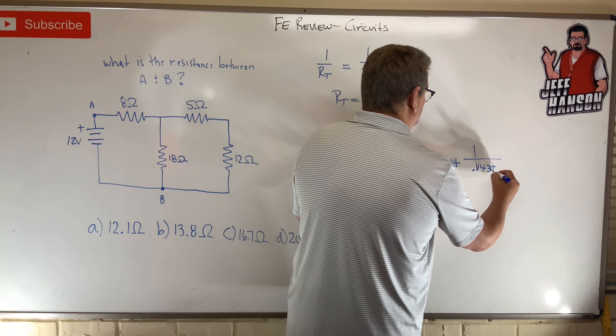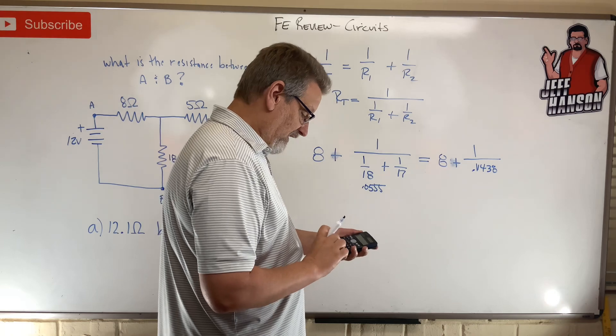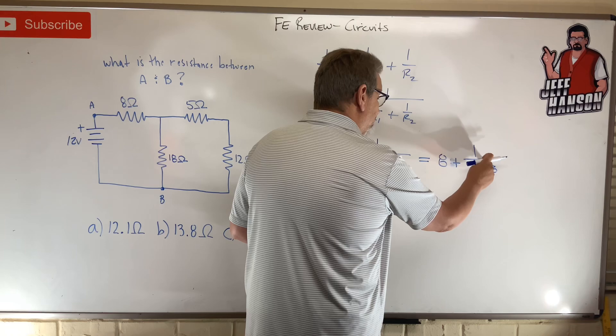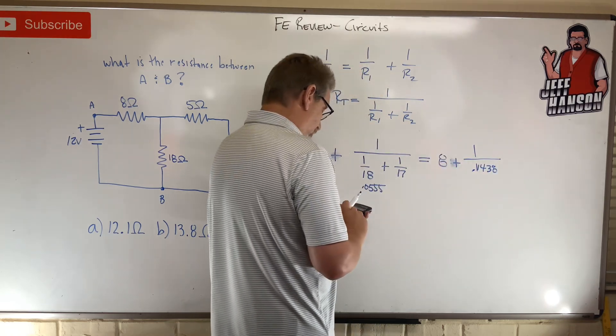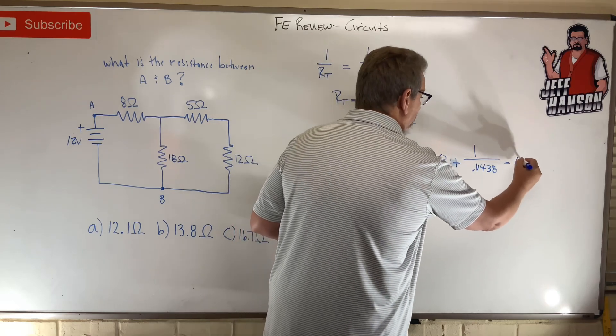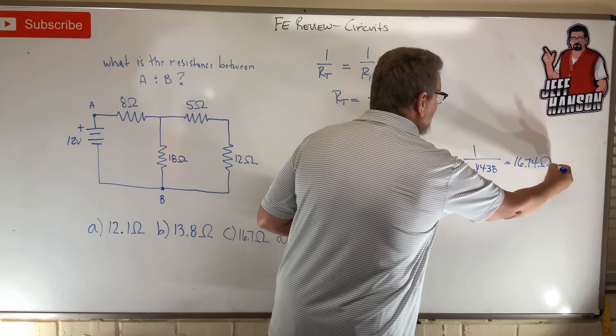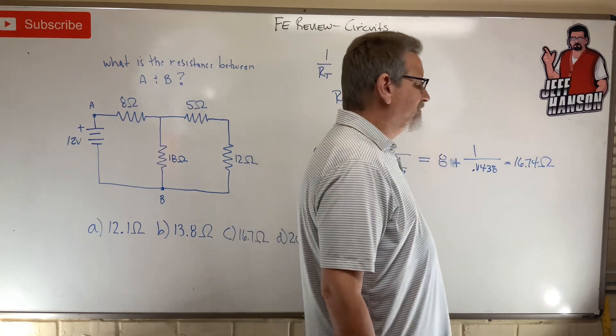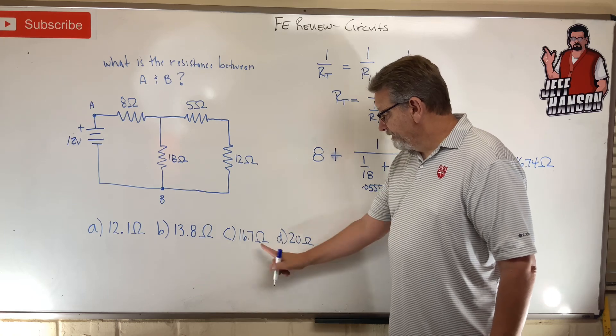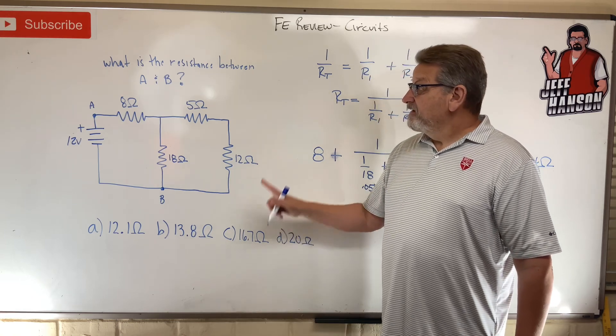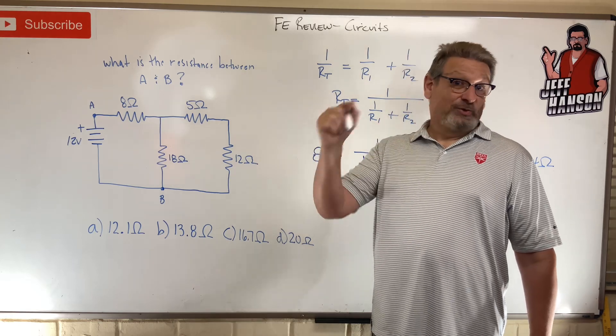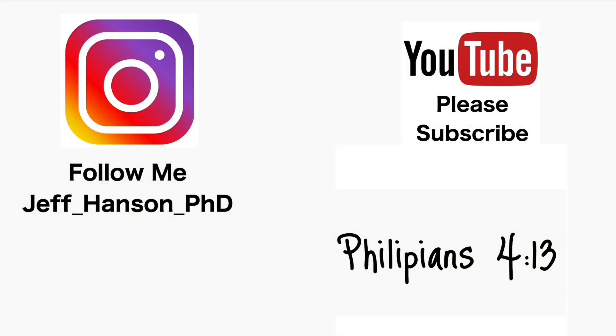One divided by 0.11438 equals 8.74. That's 8.74 plus 8 more equals 16.74 ohms. So the answer is 16.74 ohms. Is that an answer choice? There it is! Parallel resistors - did you remember that? We have an answer. Let's do another one.